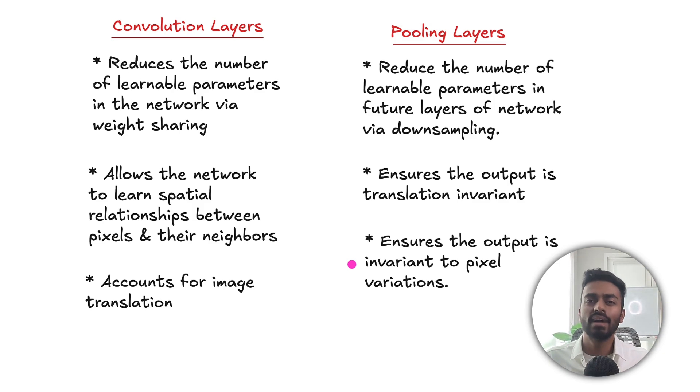So what we've seen so far with some of the advantages of having these layers are that convolution layers, they reduce the number of learnable parameters in the network via weight sharing, they allow the network to learn spatial relationships between pixels and their neighbors, and they also account for image translations. Pooling layers reduce the number of learnable parameters in future layers of the network via down sampling, it ensures the output is translation invariant, and ensures the output is invariant to pixel level variations.